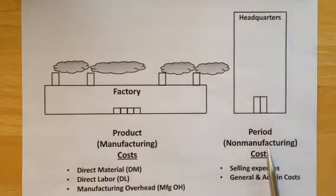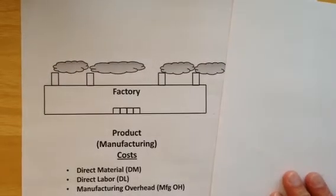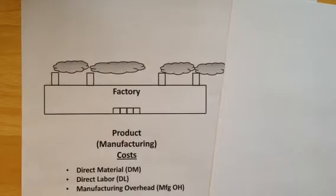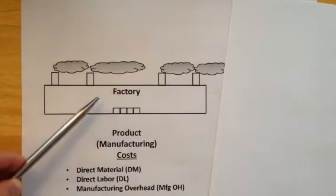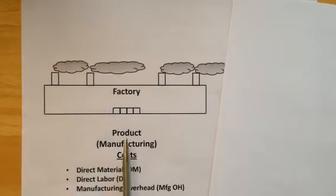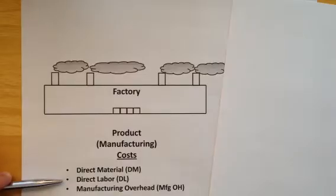We'll come back to period costs in just a moment. For now, let's focus on what is happening in the factory. The factory side of our organization is where we produce our goods. All of the expenses incurred here are known as product or manufacturing costs, and there are three major categories: direct material costs, direct labor costs, and manufacturing overhead.